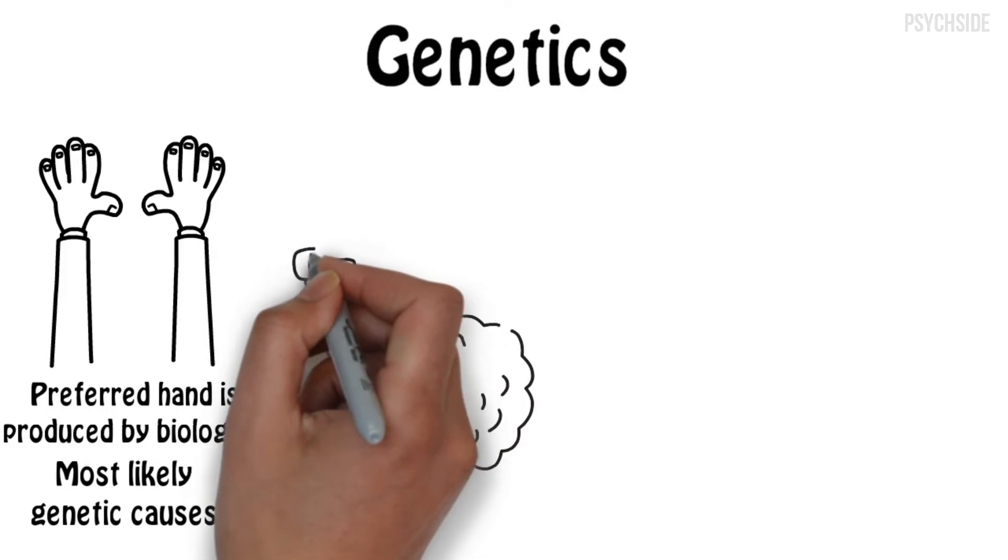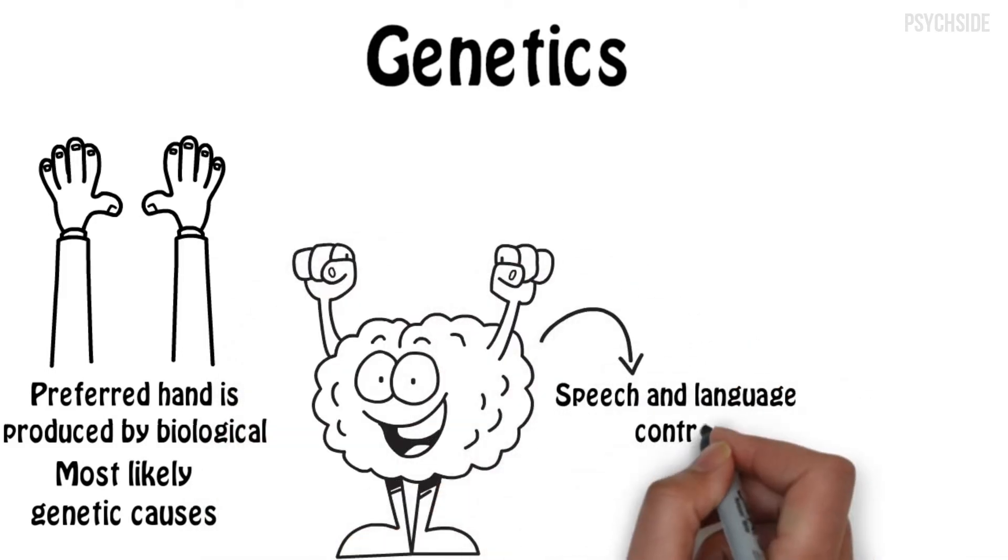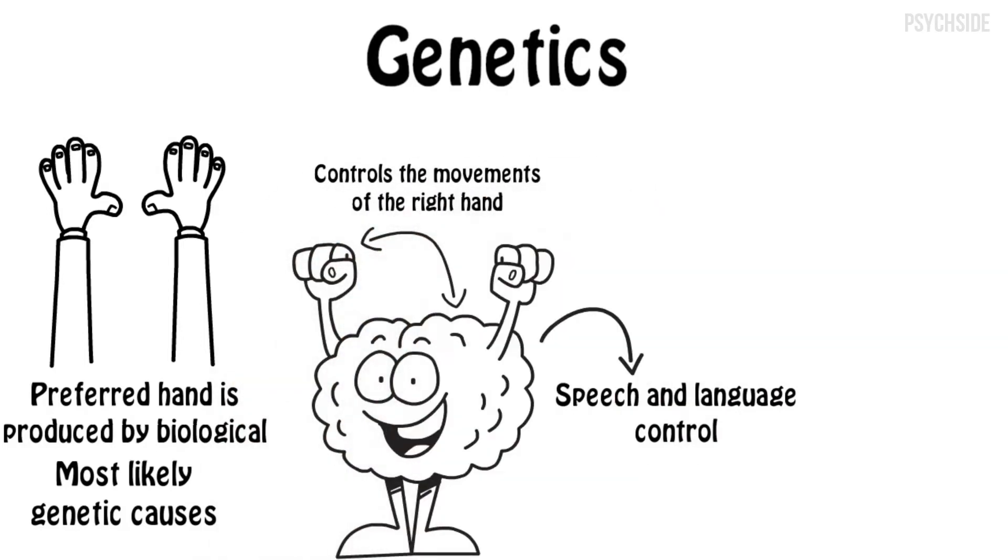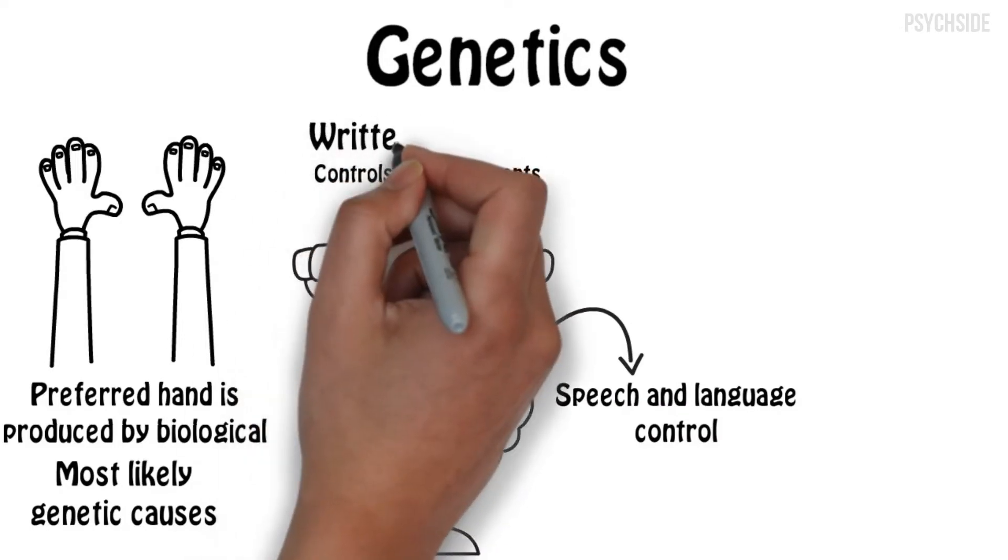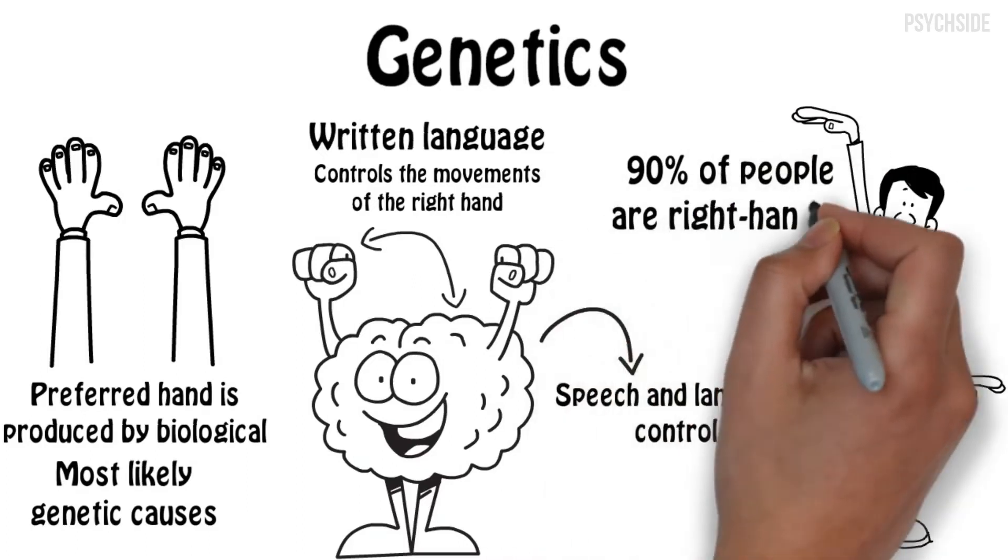Evolutionary natural selection produced a majority of individuals with speech and language control in the left hemisphere of the brain. The left hemisphere also controls the movements of the right hand, and notably the movements needed to produce written language. Approximately 90% of people are right-handed.